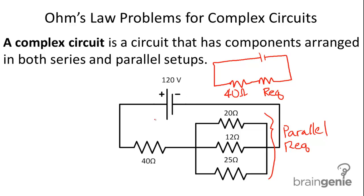So, as you can see, we have a section that's arranged in parallel, and if we can determine the equivalent resistance of this section, we can then simplify the diagram and have basically two resistors arranged in series.